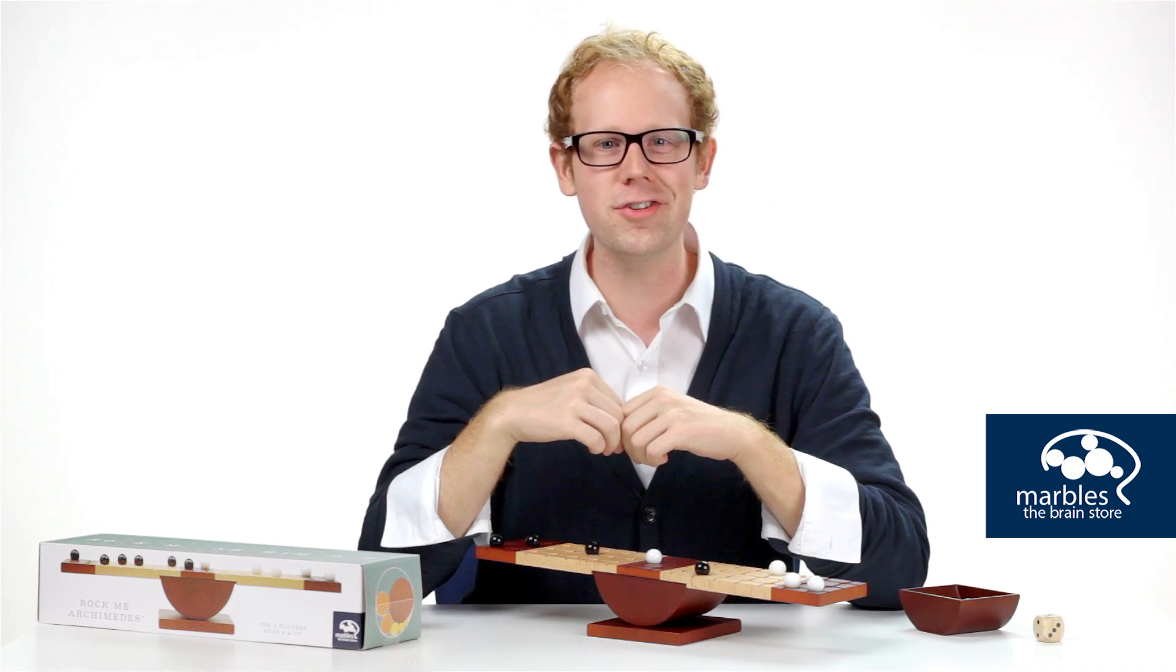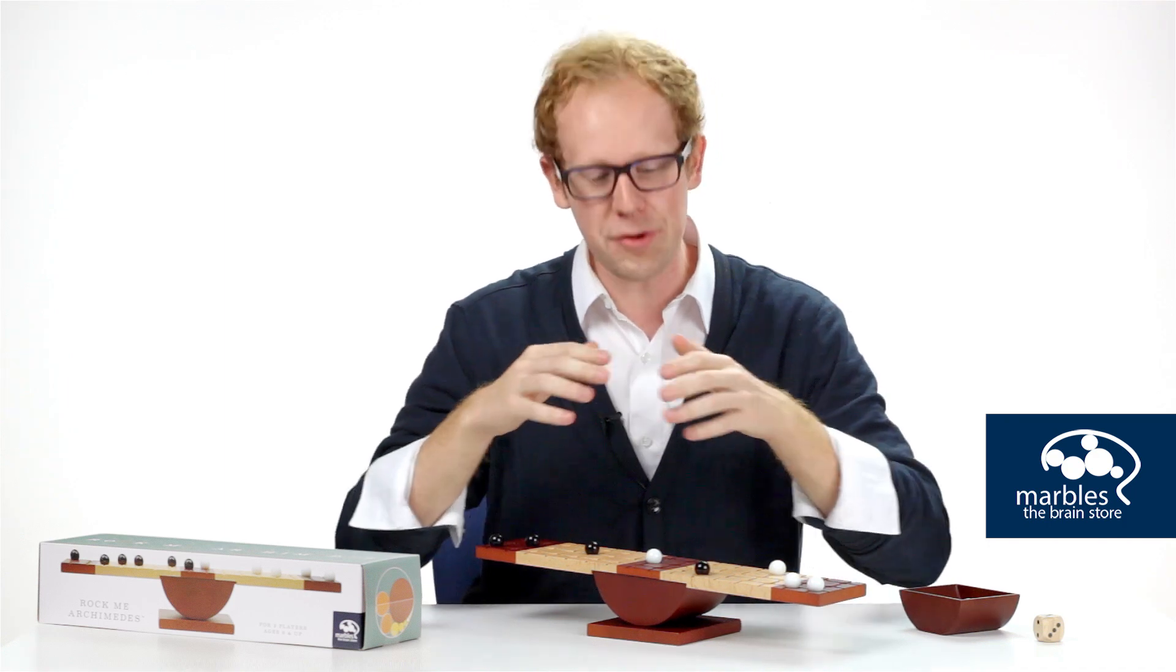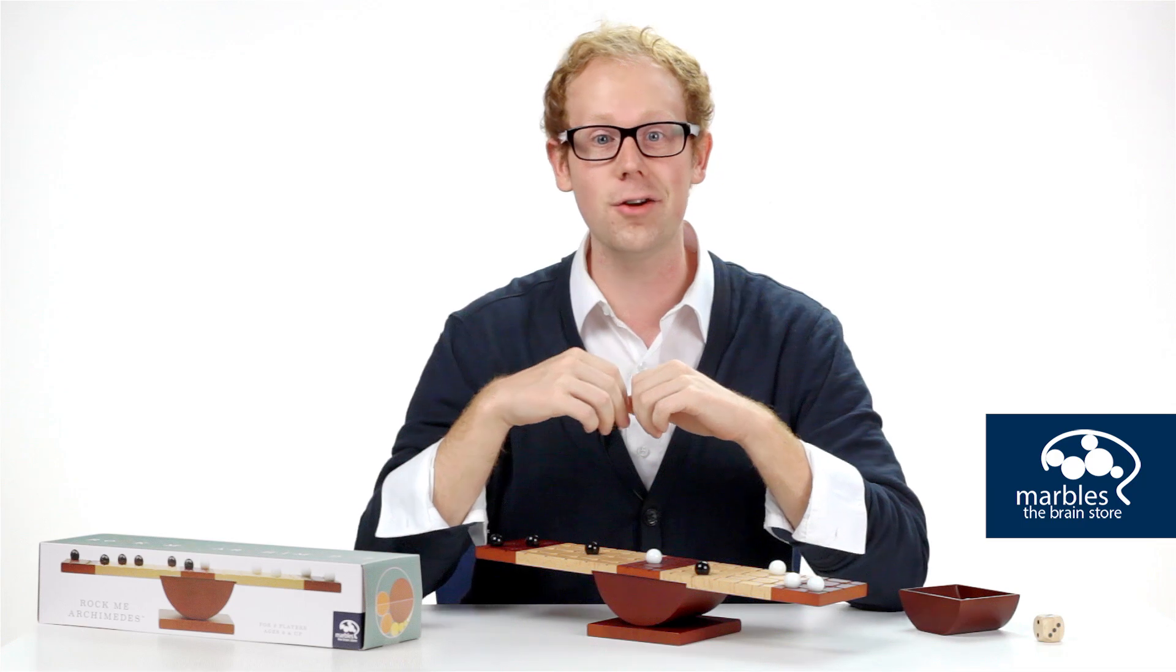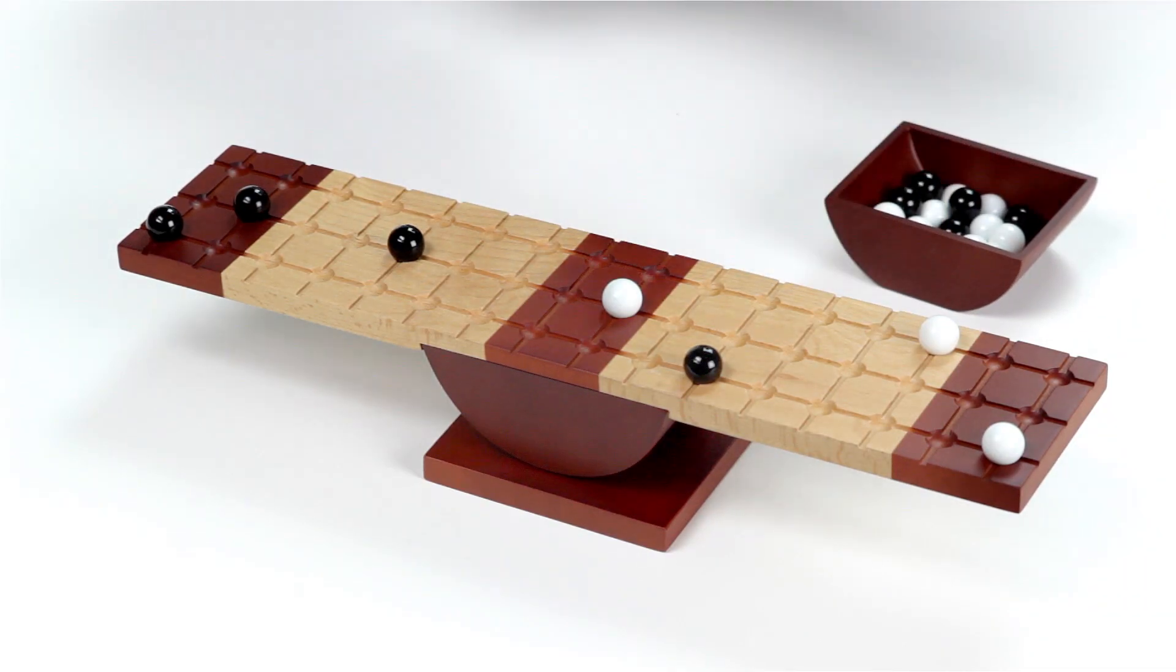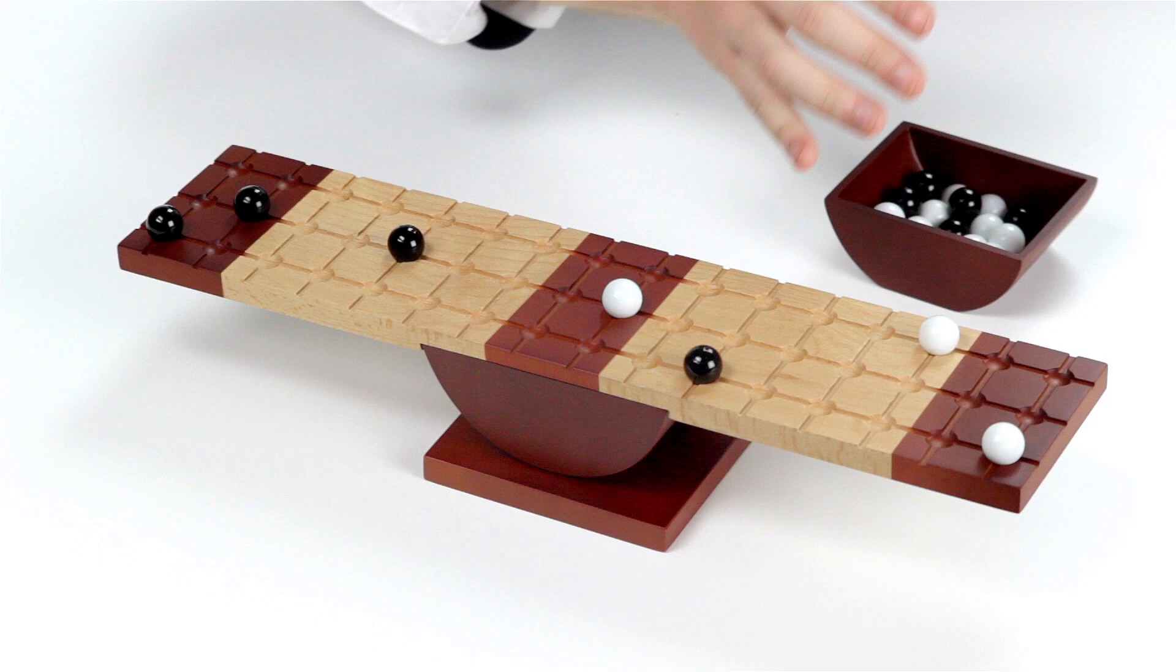All this talk of levers and Archimedes is the inspiration behind Rock Me Archimedes, and it's sure to give Amadeus a run for his money. In this two-player strategy game, the goal is to get four of your own marbles into your end zone. So black would try to move into here, and white would try to move into here.